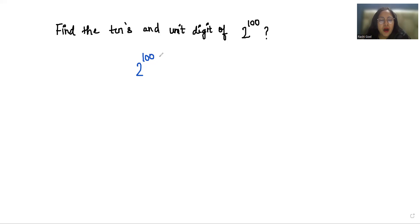So 2 power 100 we can write it as 2 power 10 times 10. And according to exponent rule, a power m power n is equals to a power mn or a power n power m. So we can write this as 2 power 10, whole power 10.